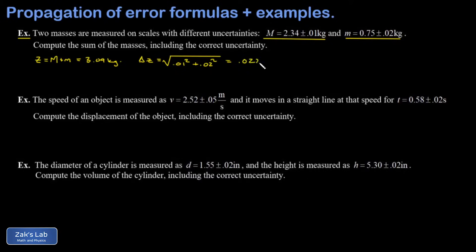When I run the numbers on this, I get 0.022 for the uncertainty in the sum of the two masses. And then we follow our rounding convention and round that to one significant digit, so it's 0.02. And finally, we express our final answer as 3.09 plus or minus 0.02 kilograms.